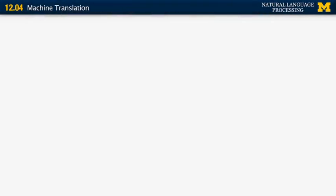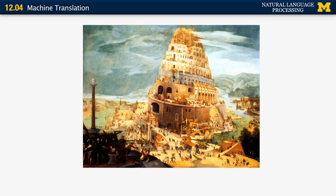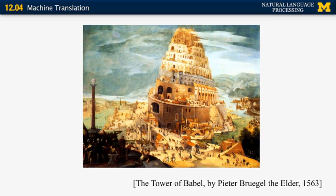Here is a famous painting by Pieter Bruegel from 1563 depicting the Tower of Babel. There is a biblical story that says people were only speaking one language at the time, and then when they built the Tower of Babel, God created all the different languages so people couldn't talk to each other so easily. We are trying to solve this problem now by creating machine translation systems.